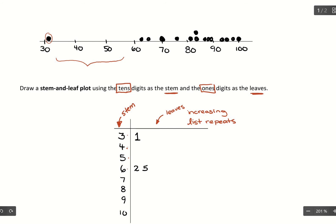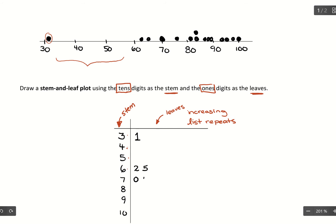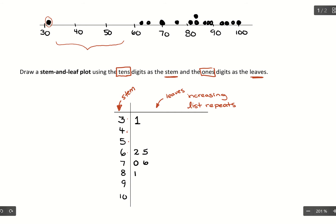So it would be read as 62 and then 65. For the 70s we have 70, so we'd put a 0 there, and 76. For the 80s we have 81, then two values of 82 — so you write the 2 twice to represent that we read 82 twice — then 87, 88, 89. Then we have 94, 95, and 98, and then we have 100.